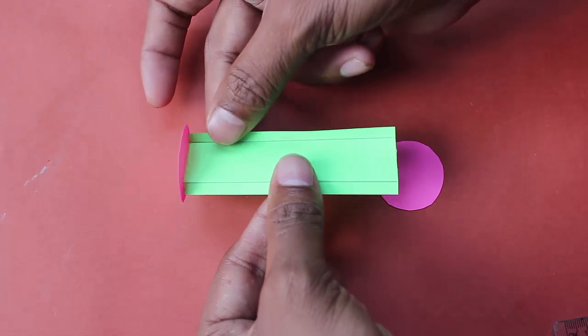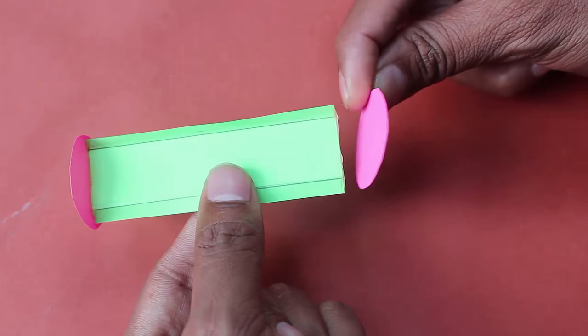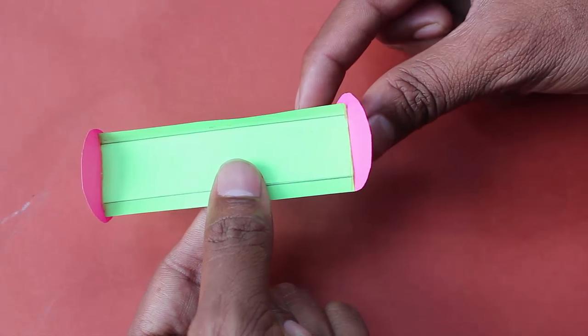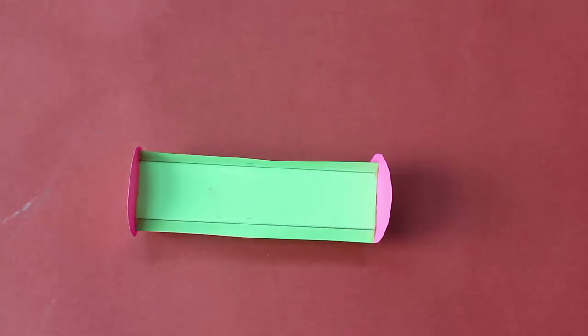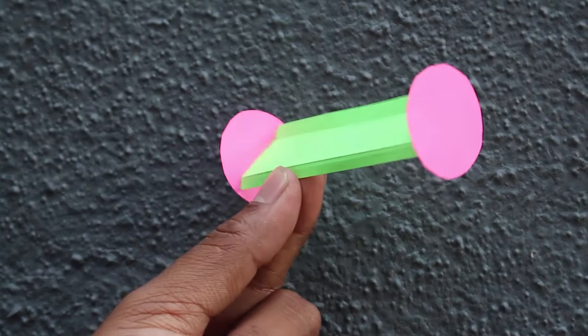If you look at this toy closely, it will look more like a paper bench. The tumbler is now ready to fly. Leave it in the air from a height.